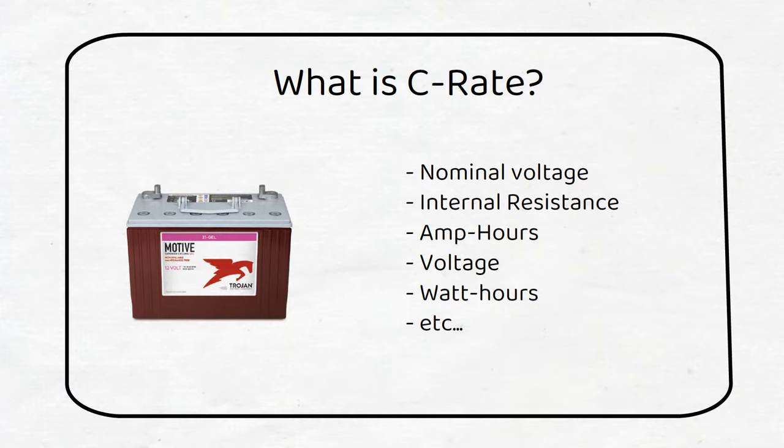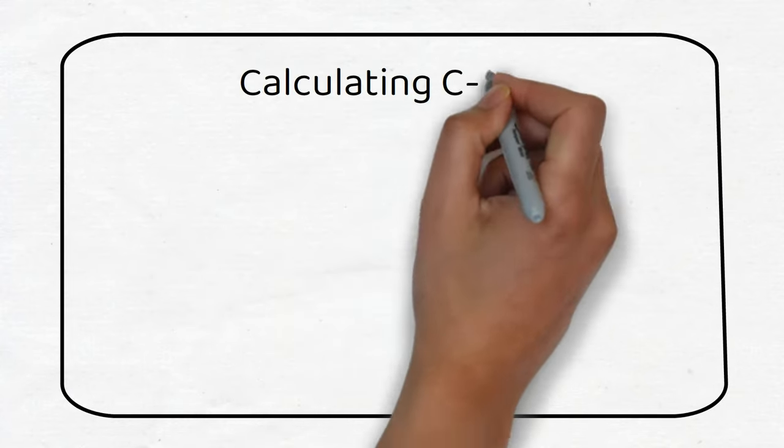C-Rate is a number that tells you about how fast you can charge and discharge a battery. Typically the C-Rate is displayed as C followed by a number like C20. It can also be shown as C with a number behind it like 0.05C. This can cause some confusion which I will explain more in the next slide.